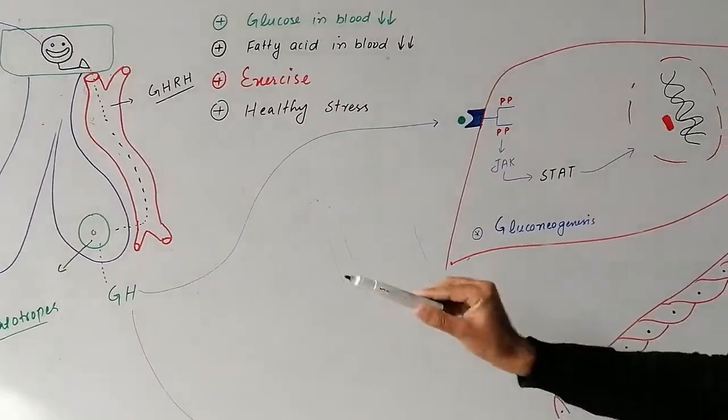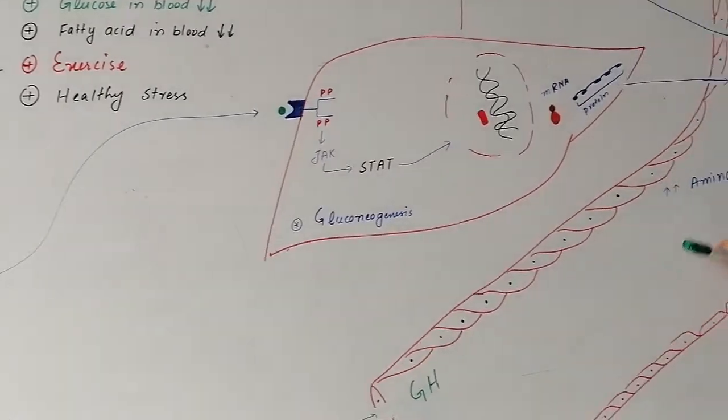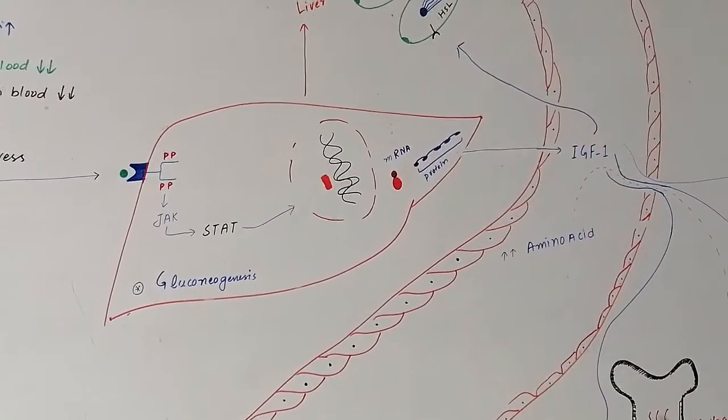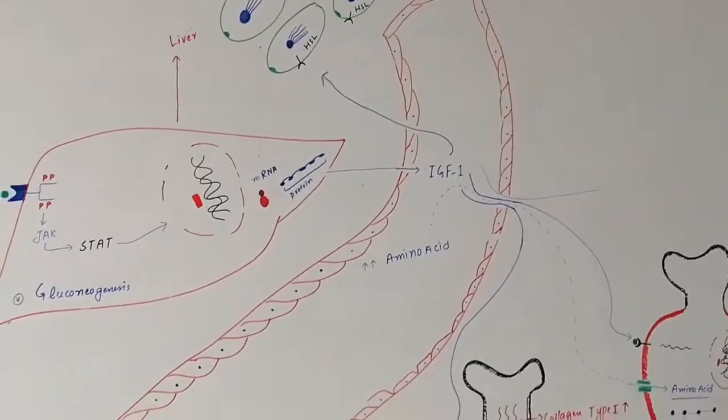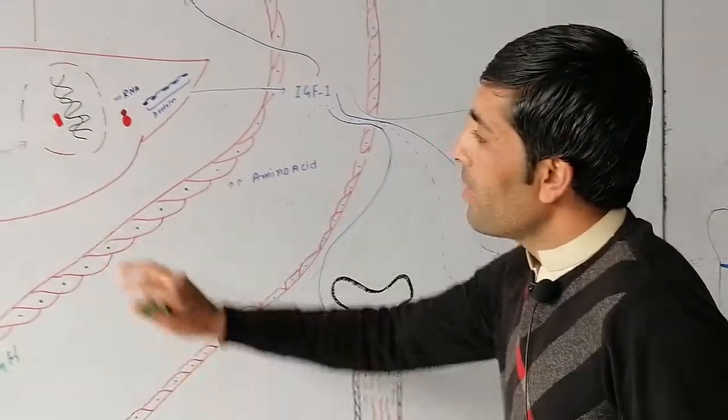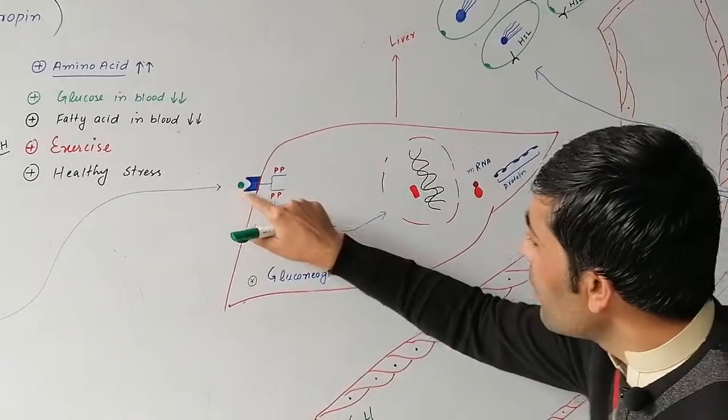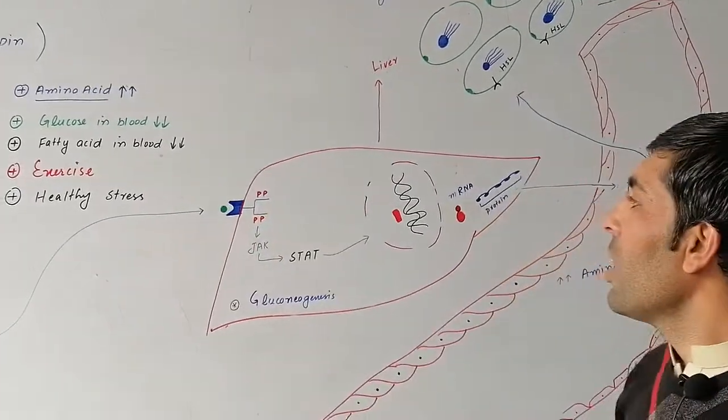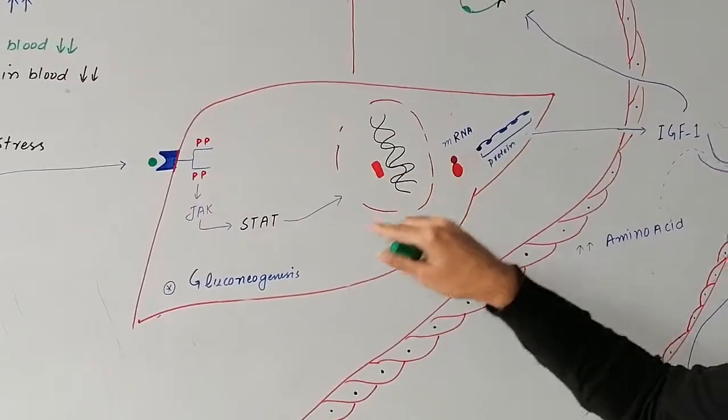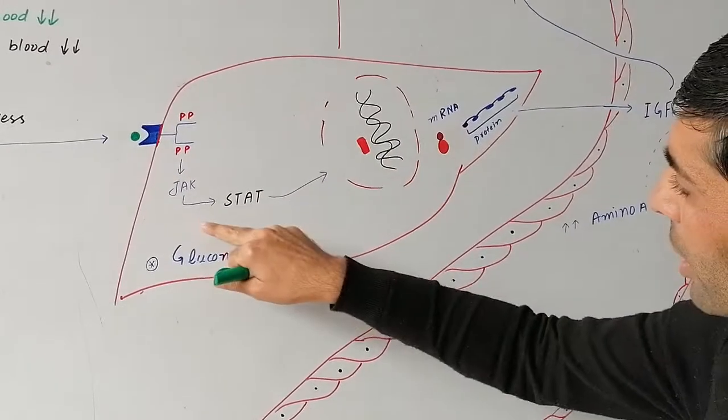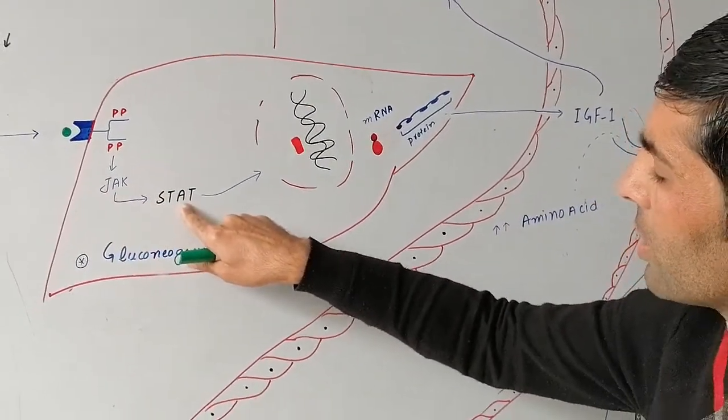This is our muscle and bone, and the circulatory system. Suppose this is the circulatory system, this is our liver, these are bones, and this is muscle. Growth hormone reaches receptors and triggers a pathway of reactions. The pathway stimulates the Janus kinase enzyme.